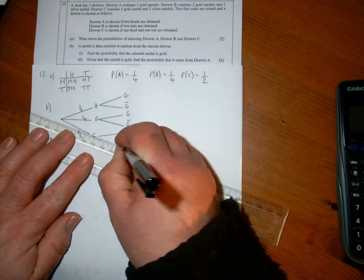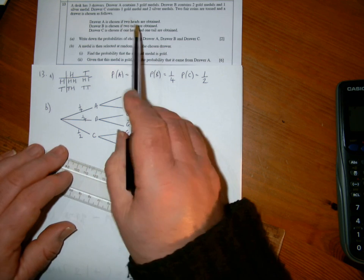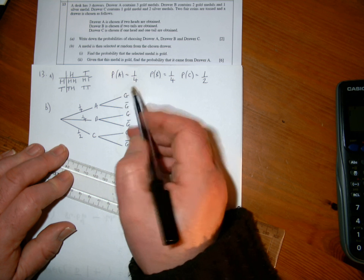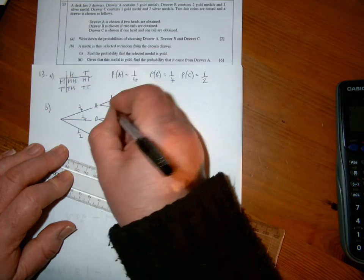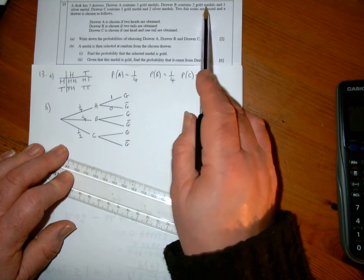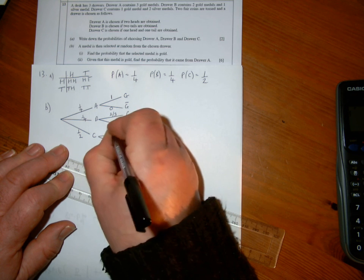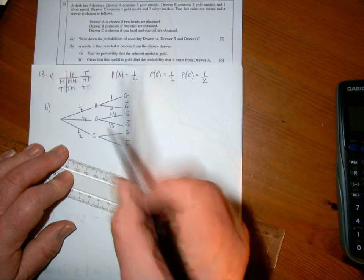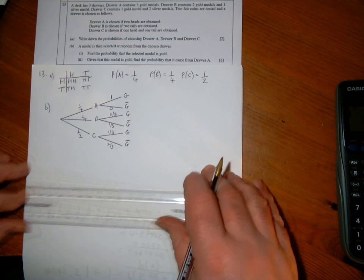In drawer A, it's three gold medals. If there's only three gold medals in there and I'm choosing a medal, it has to be gold, so that's certain to happen: probability of one. Zero for not gold. Drawer B has two golds and one silver, so the chance of gold is two out of three, and not gold would be one-third. Drawer C is one gold and two silver, so that's one out of three for the gold, and two out of three for not a gold.